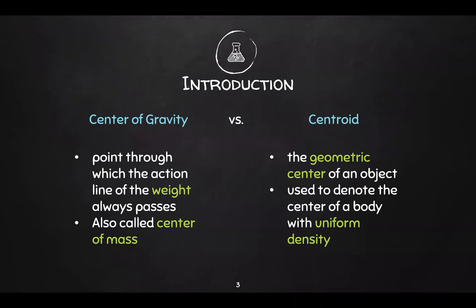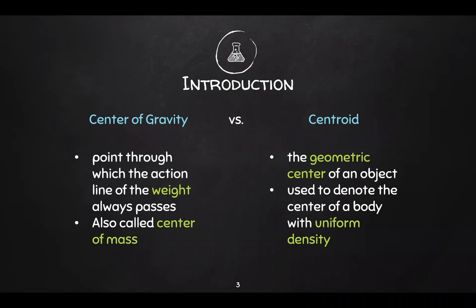Now another topic related to equilibrium is center of gravity and centroid. These two are often interchanged with each other. However, even though they consist of the same concept, center of gravity and centroid are two terms that differ based on the concept in which each is used and the object it is used in regards to. Center of gravity is the point through which the action line of the weight always passes — it has something to do with weight. Another definition is it's the center where the mass of the object is concentrated, which is why it's also called center of mass.